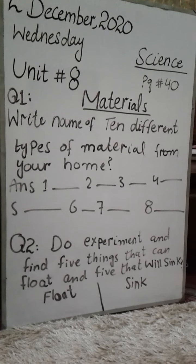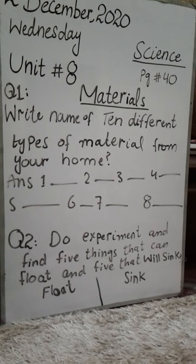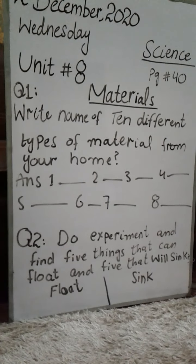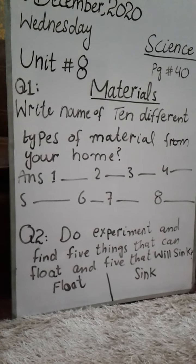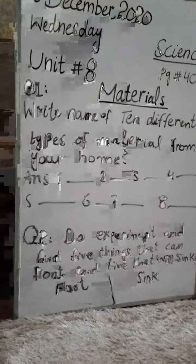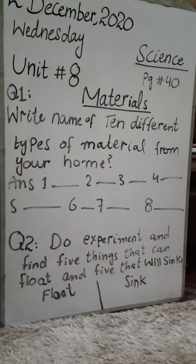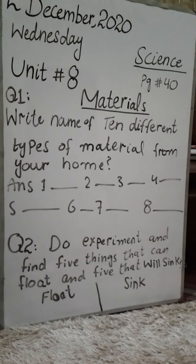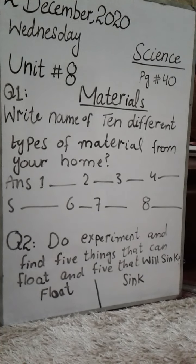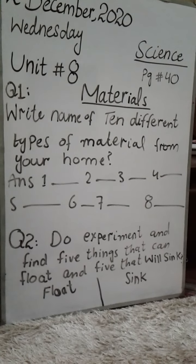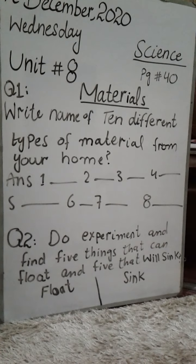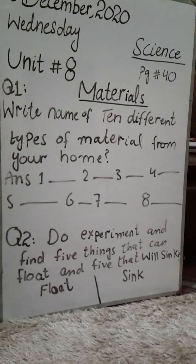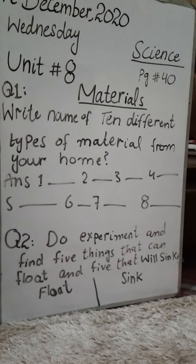I have guided you to look around your home — either the bedroom or the TV lounge. There are many things available. You have to find out what material all those things are made from, and then write it down in your notebook. Write the names of 10 different types of materials from your home. You have to write 10 different types of materials. I am not writing them because it is your task to find out from your home.